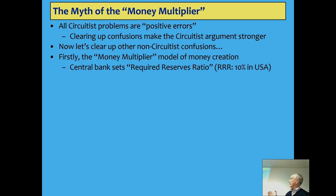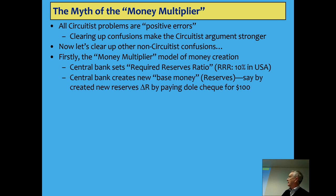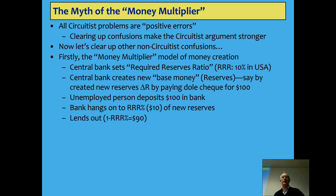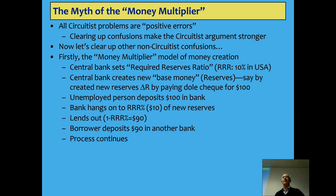What that model says is the central bank has some required reserve ratio, which is 10% in the States. The argument is the central bank creates base money — the change in reserves is $100. Some new person becomes unemployed, so they get a check for $100. That person deposits $100 in a bank, the bank hangs on to $10, lends out $90, the borrower deposits $90 in another bank, that bank lends out $81, and so on — ultimately creating $1,000 out of the $100. That's the basic argument.